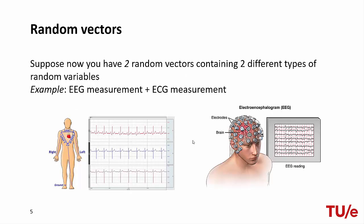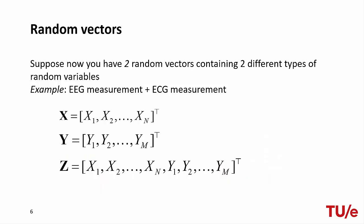Random vectors are also convenient to combine random variables from different sources. Suppose we have an additional measurement such as an ECG, which is also derived from multiple electrodes. We can think of the signal from each electrode as a different random variable. By using random vectors, we can easily combine these two measurements. For example, if we have the random vector X containing all EEG measurements and the random vector Y containing all ECG measurements, the random vector Z containing both measurements can be expressed as the concatenation of X and Y.